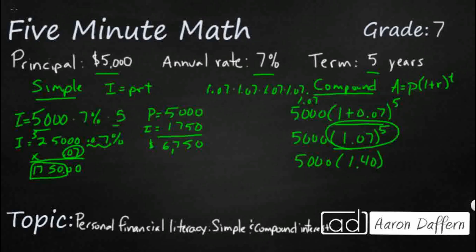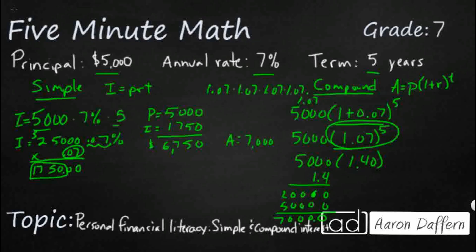So let's multiply our 5,000 times 1.40 and see what we get. This is going to give us our final amount including the original principal and all interest. We get $7,000. So if we calculate compound interest, we see that our amount is going to be about — roughly, because we rounded — about $7,000. And you notice that that's a little bit bigger than the compound compared to the simple interest result of $6,750.